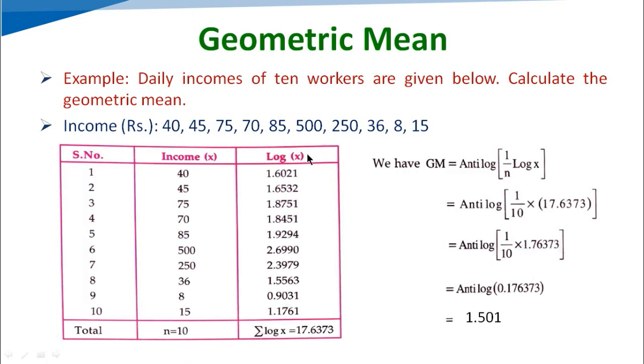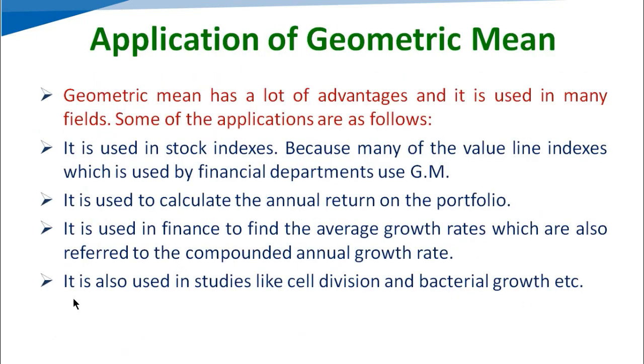We have to convert each x value to log x. Then we have to find the summation, sigma of log x. Then we can apply the equation directly: GM equals antilog of 1 upon n log x. We get antilog of 0.176373, and the answer is 1.501. Geometric mean can be found easily with the help of this equation.